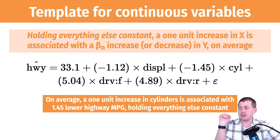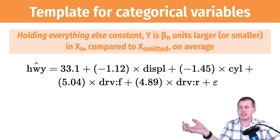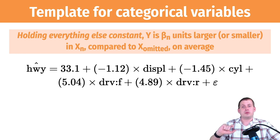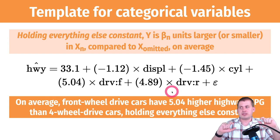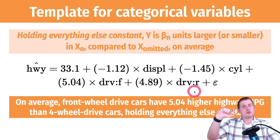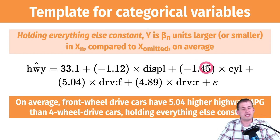With categorical variables like drive, that's the switch. The interpretation: holding everything else constant — not moving displacement or cylinders — if the car is a front-wheel drive car, it will have 5.04 more miles per gallon on average. If we flip the rear-wheel drive switch, it's 4.89 more miles per gallon. So we just manipulate each switch or slider: if it's categorical we say it's rear or not, front or not; for continuous variables we move them up a notch and observe the result.